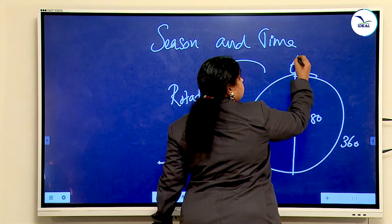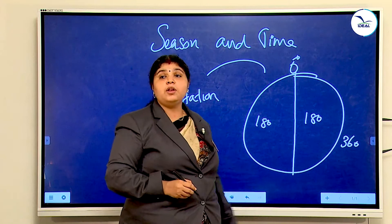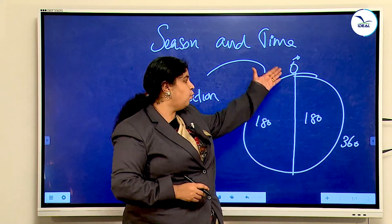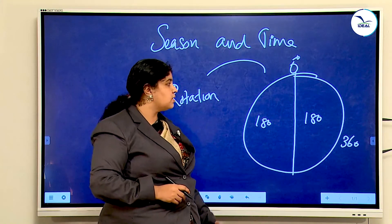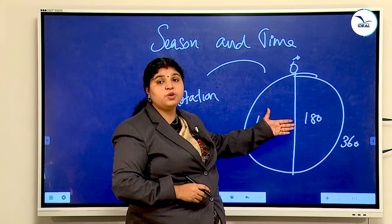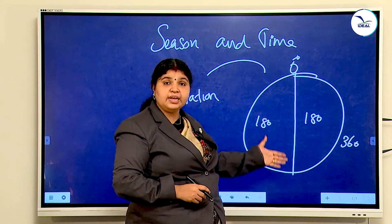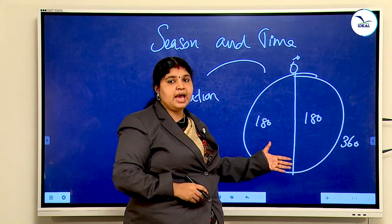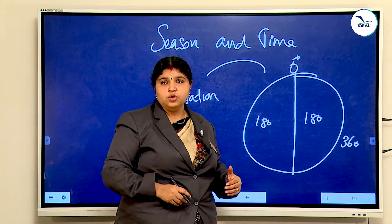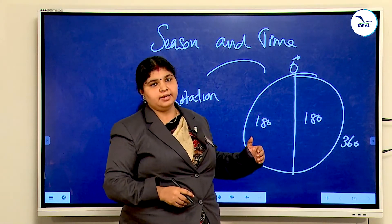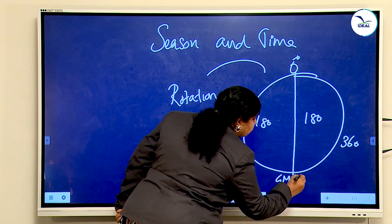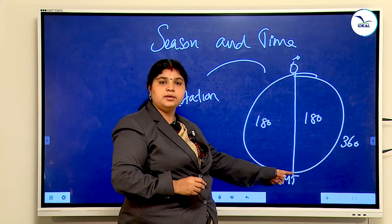First we want to learn about the zero degree longitude, also called the Greenwich Meridian or Prime Meridian. It is called the Greenwich Meridian because this meridian passes through Greenwich, where the British Royal Observatory is situated. The worldwide time is calculated based on this zero degree meridian, which is why it is called the Prime Meridian. The local time of this Greenwich Meridian is called GMT — Greenwich Mean Time.